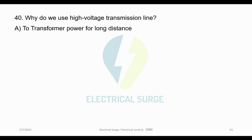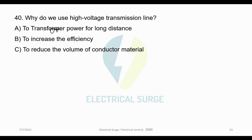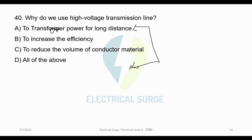To transfer power over long distances — Option D: All of the above. The key points are: to increase efficiency (Option C), to reduce the volume of conductor material (Option B), and to transfer power to long distances. Therefore, the correct answer is Option D: All of the above.